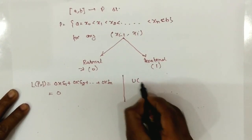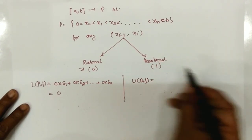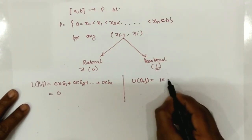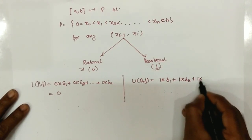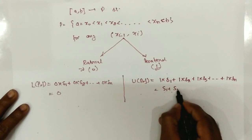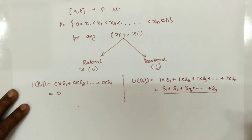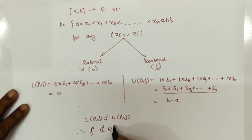Now for the upper Riemann sum, capital M_i is 1 for each interval since it contains an irrational number. So the upper Riemann sum is 1·Δ_1 + 1·Δ_2 + 1·Δ_3 and so on, which equals Δ_1 + Δ_2 + Δ_3 + ... = b - a. As we can see, LPF is not equal to UPF, therefore f is not Riemann integrable.